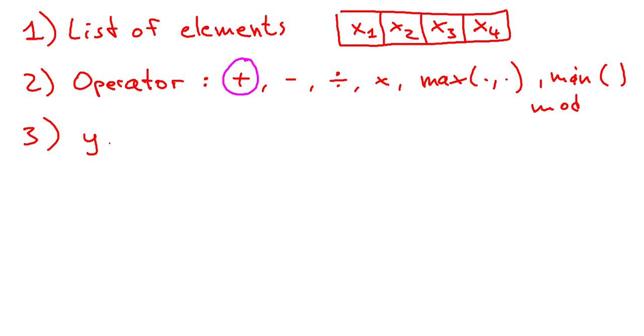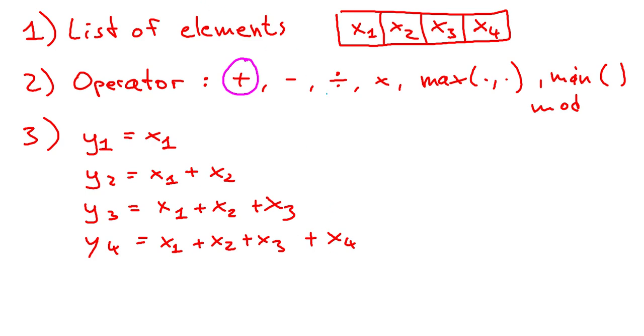For each input value we have an output value. We call the output values y1 to y4 and y1 is equal to x1. y2 is equal to x1 plus x2. y3 is equal to x1 plus x2 plus x3. I think you get the idea. And y4 is equal to x1 plus x2 plus x3 plus x4. Bam! Finished! That's prefix computation.